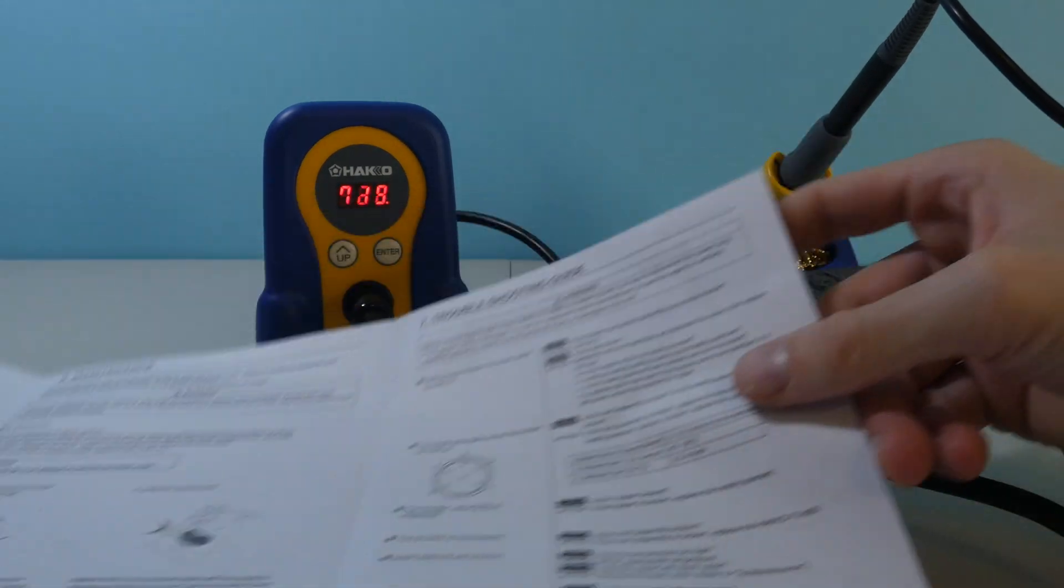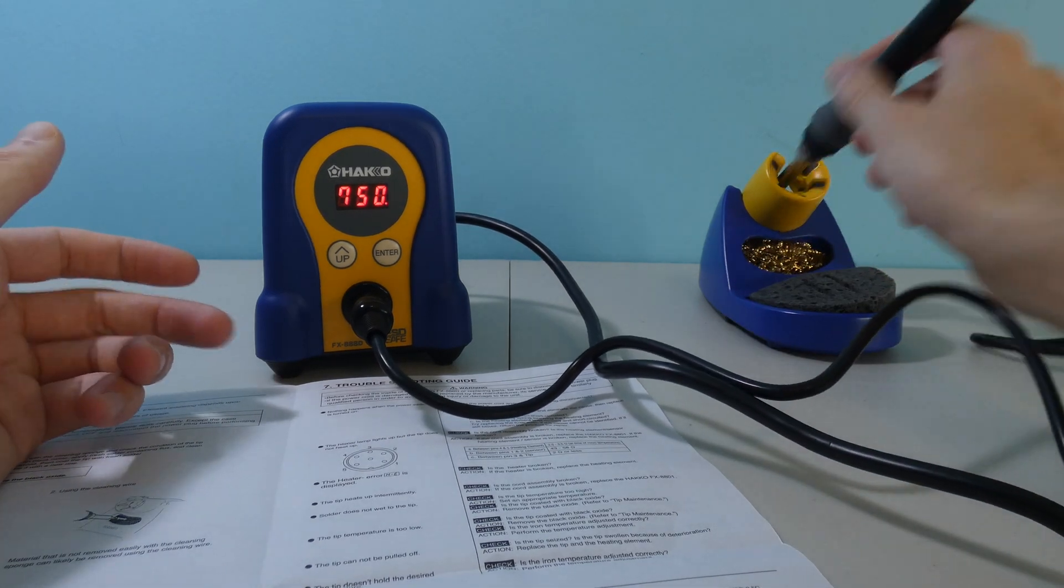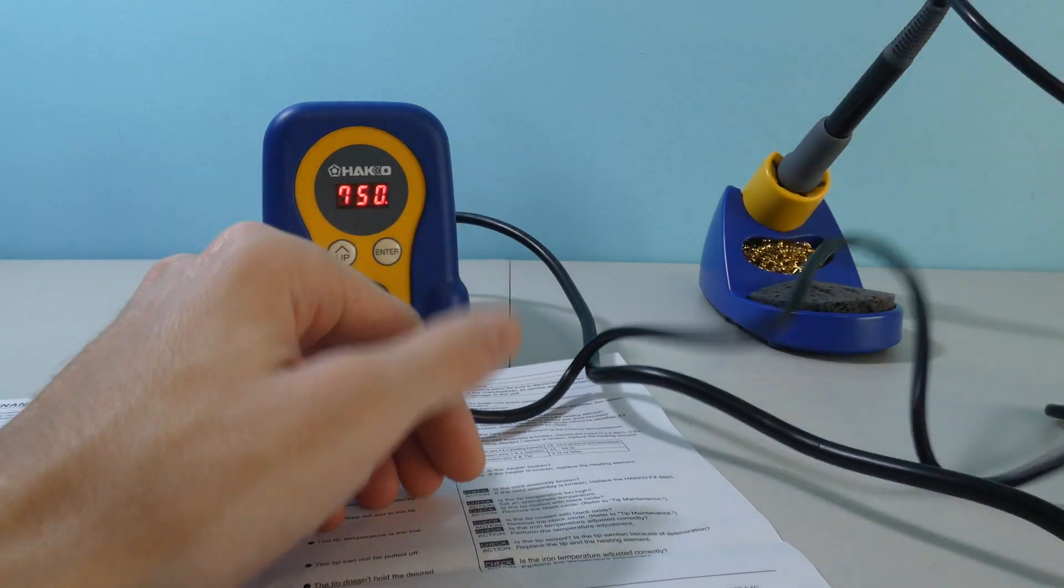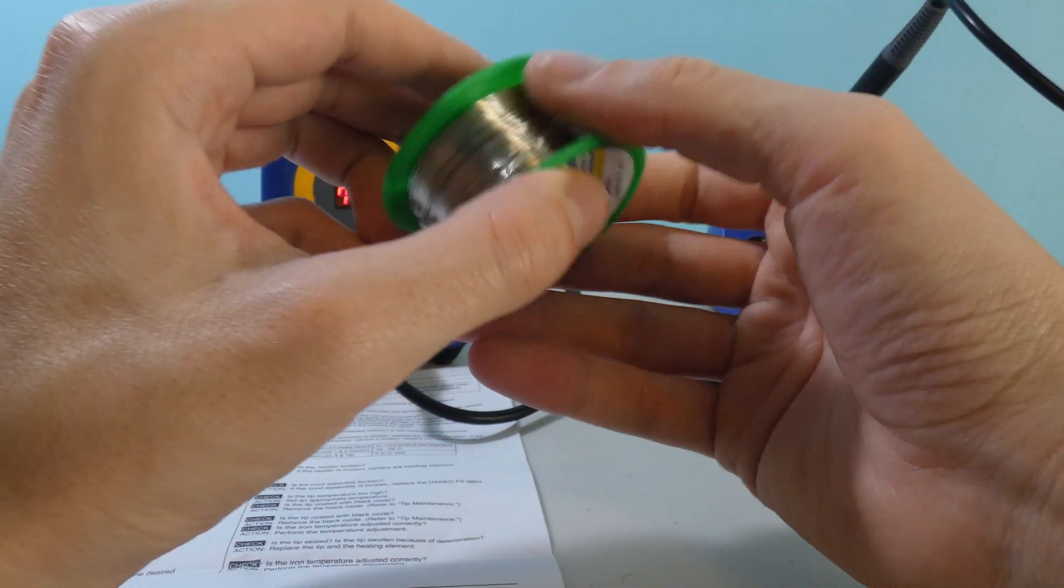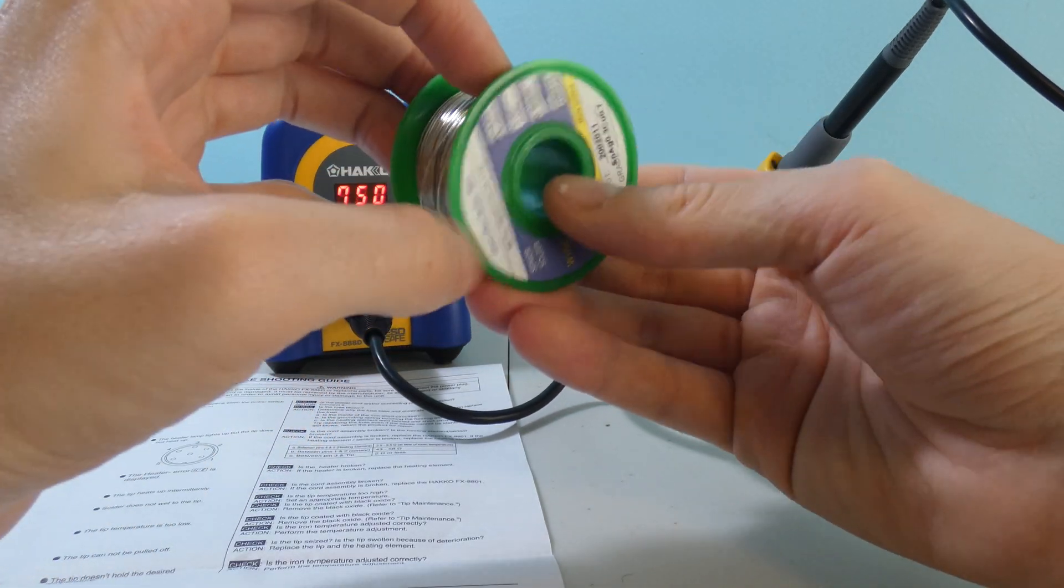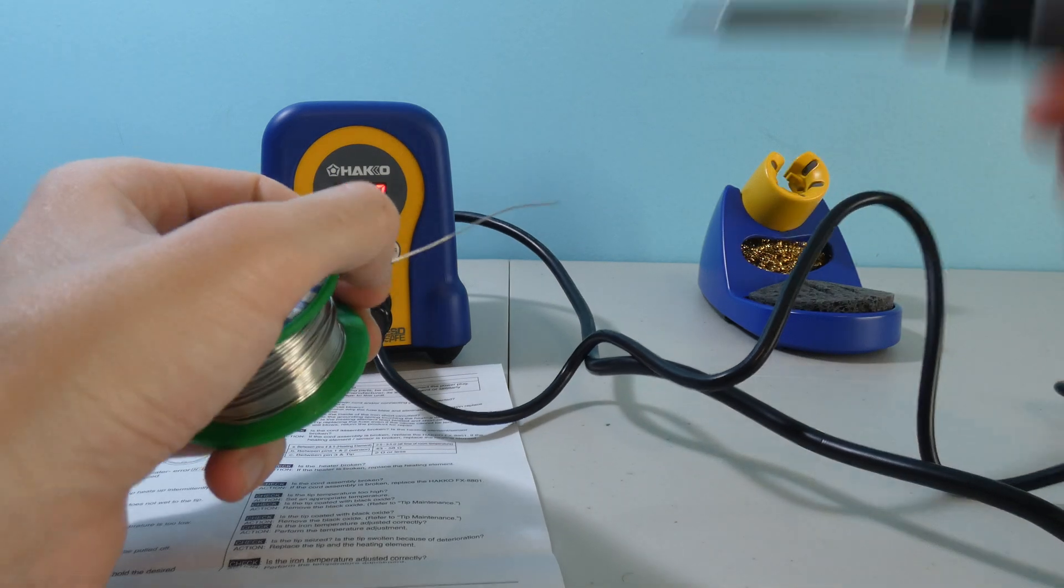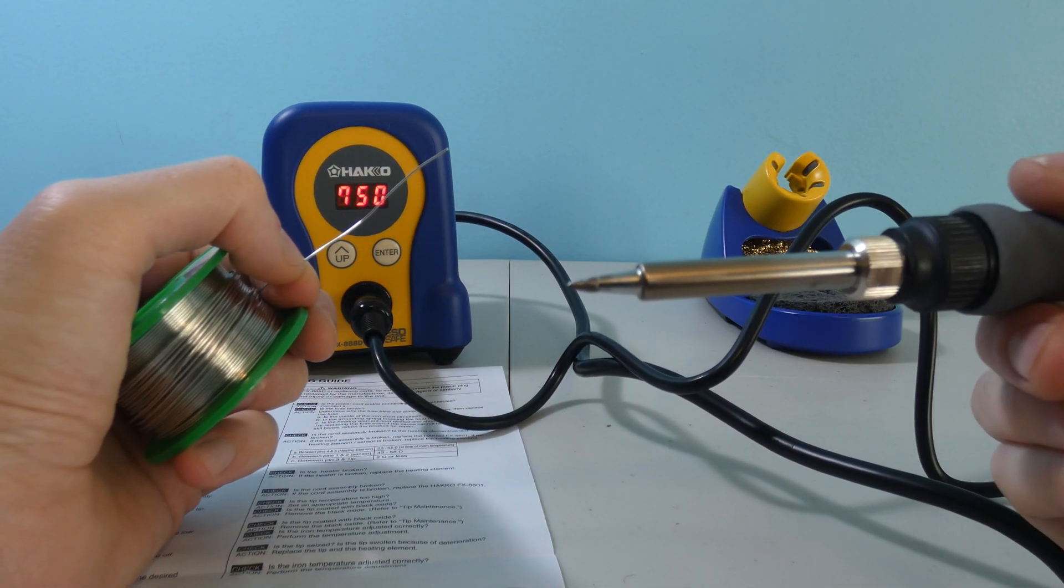It's climbing very fast. It's already at the 750 mark. I can feel a little bit of heat to it. I'm not going to touch it. I have a little bit of solder right here. Let's touch it to it and see if it's ready to melt. Just touch it to it. Yeah, just like that. This thing is hot. Very cool.